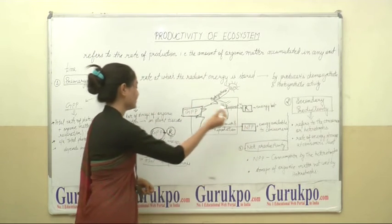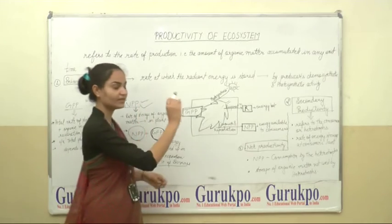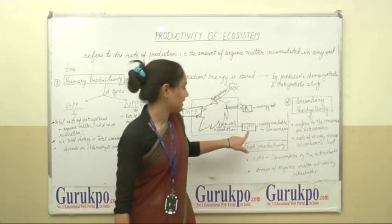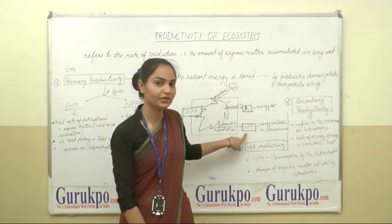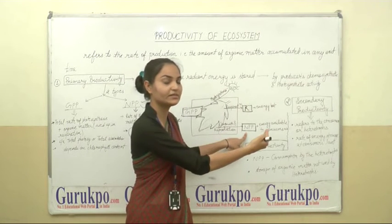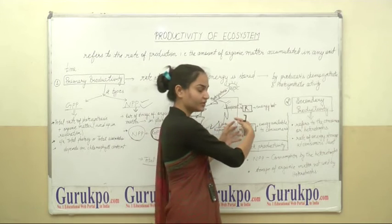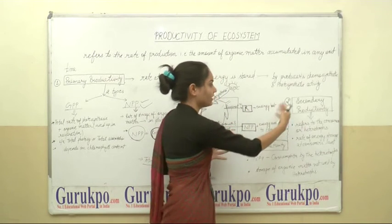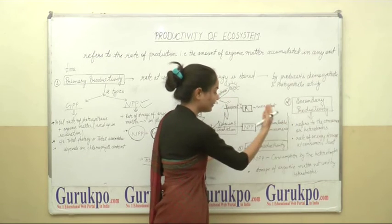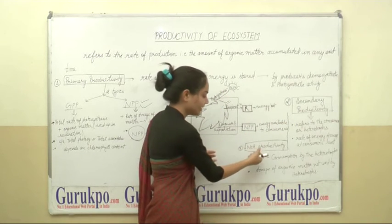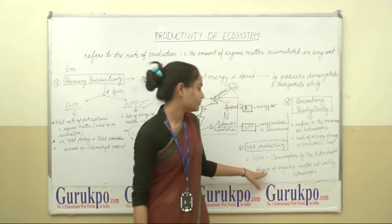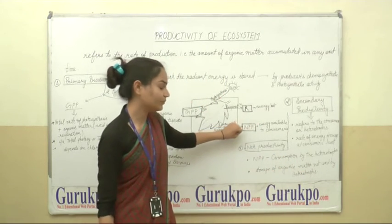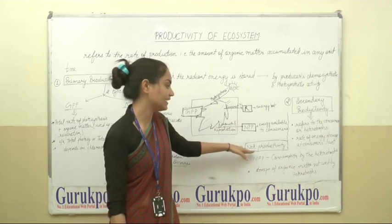This net primary productivity is available to consumers. Some part of it is stored in consumers — that stored part is called secondary productivity — and the remaining part, not used and stored at the producers level by microbes, is called net productivity.